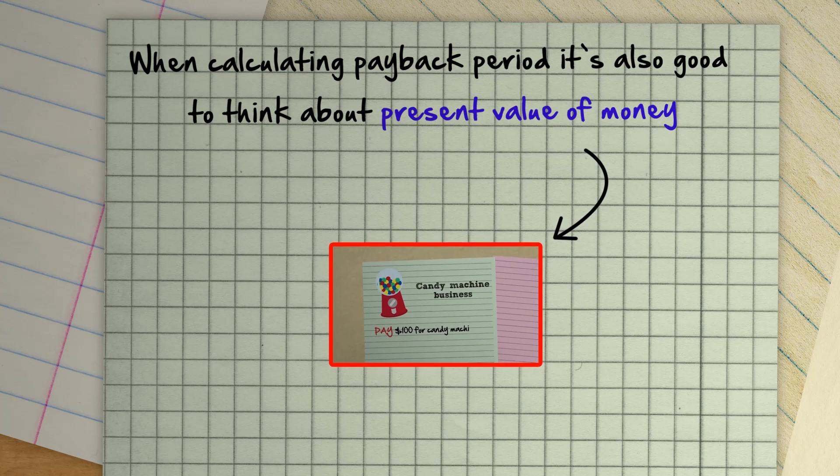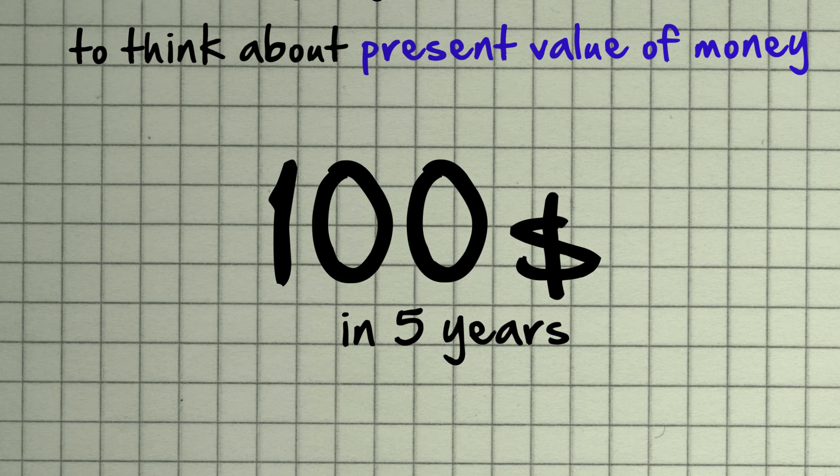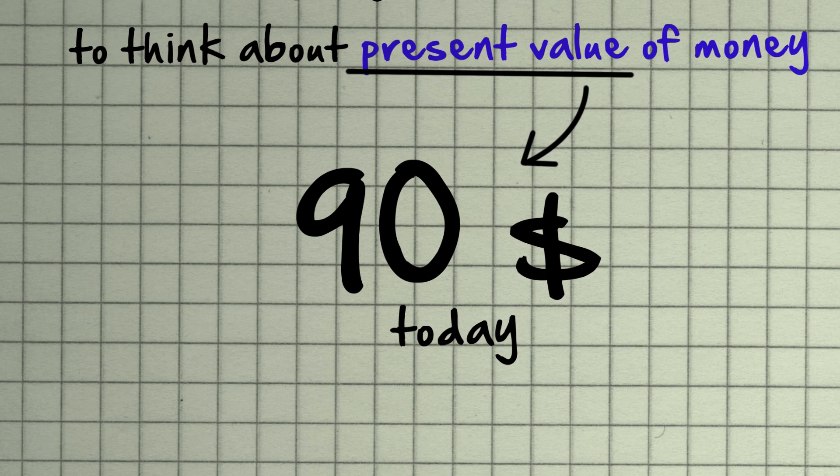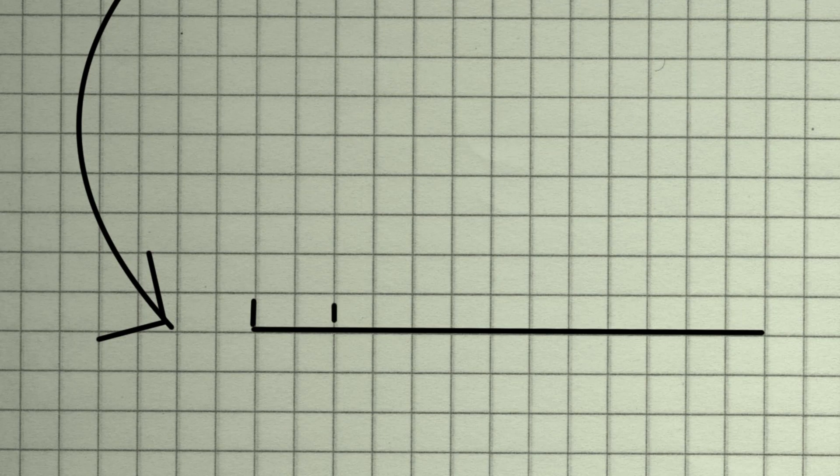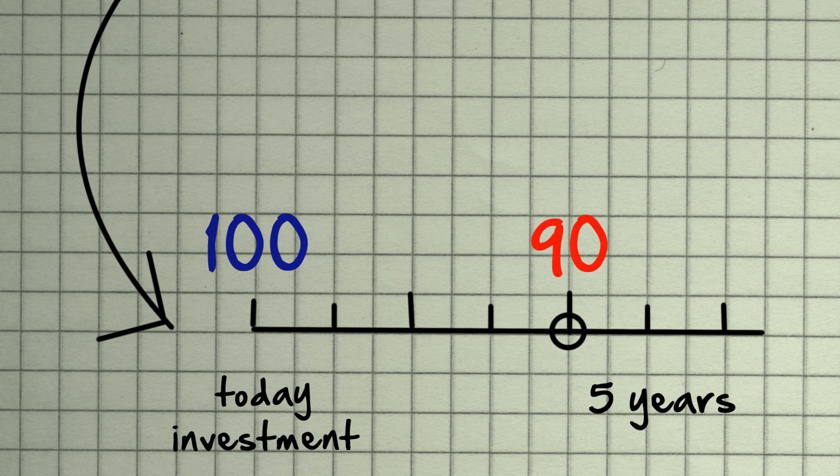Going back to our example, you might earn back your $100 in five years, but the present value of your future $100 might only be worth $90 today. Therefore, it might not be accurate to say that your payback period is five years because in five years, you would only get back $90 in today's money. Not enough to cover your $100 investment today.